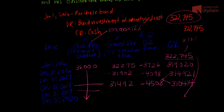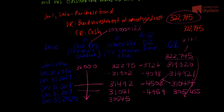For the last year, interest revenue is $305,455 times 10%, and the final carrying value comes to $300,000 — which is exactly what we need at the end of the bond. We need it on our balance sheet at the face value at maturity.